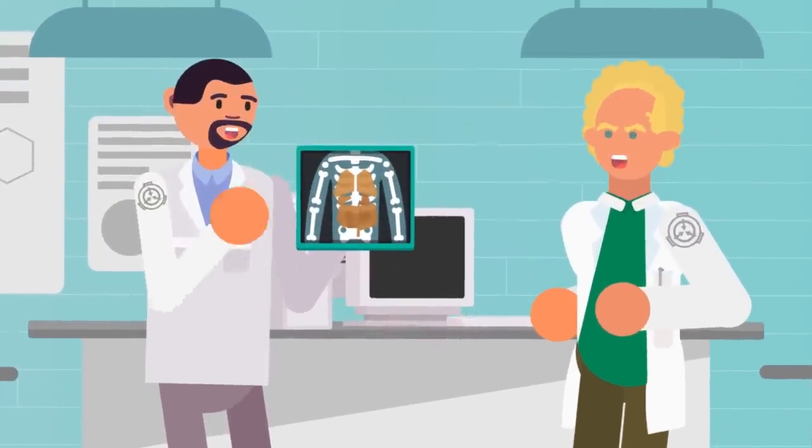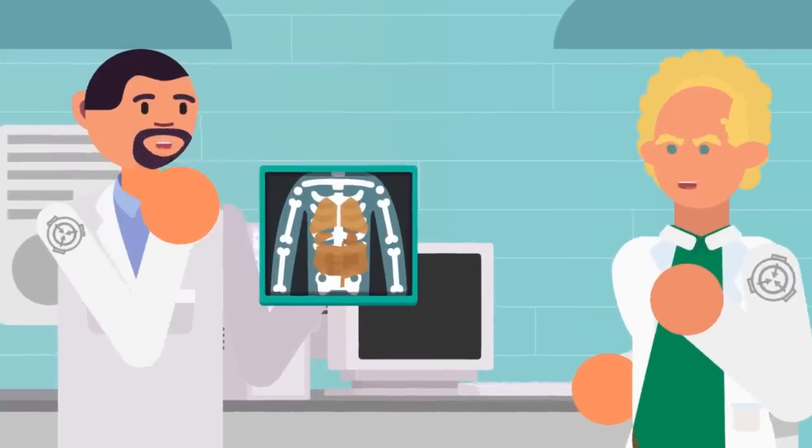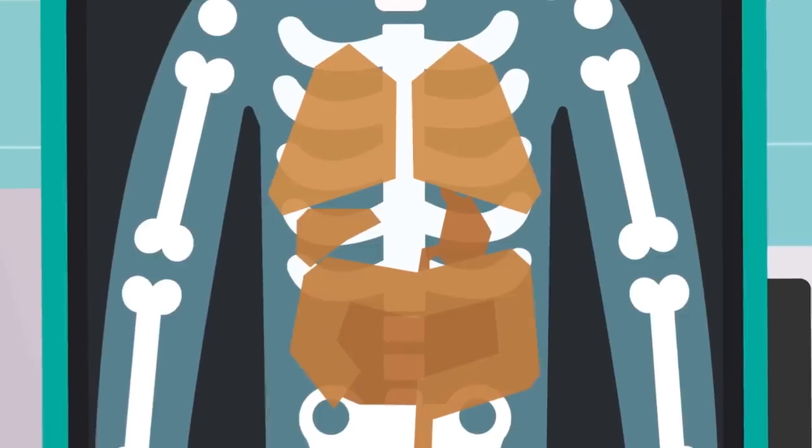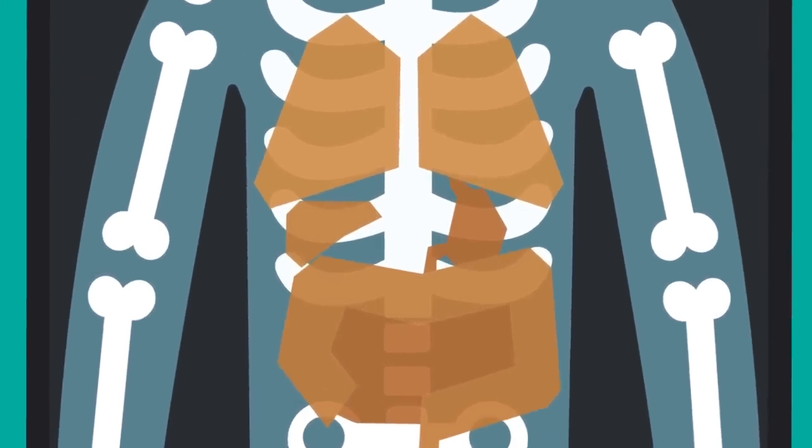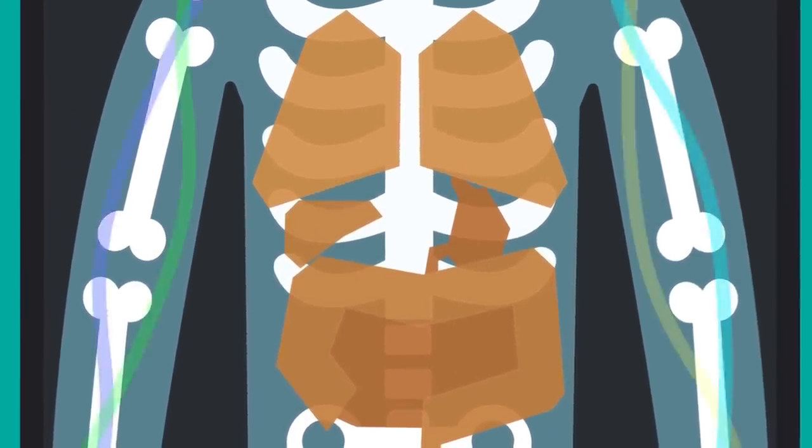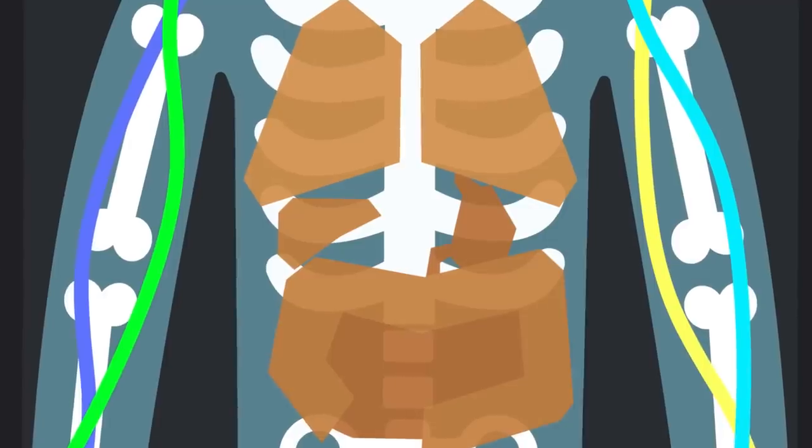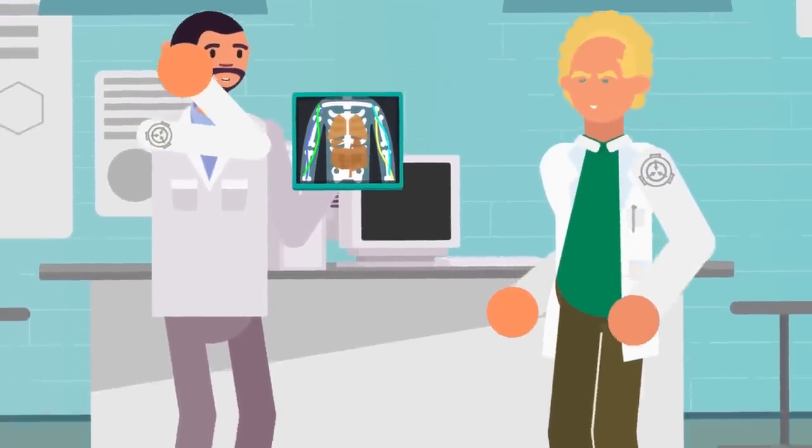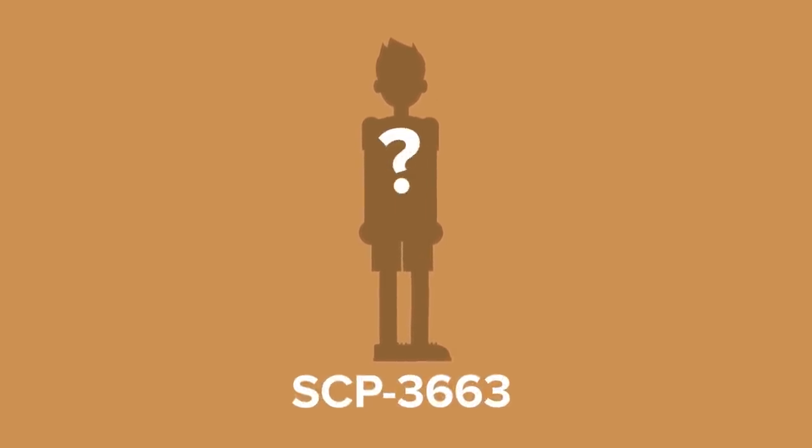Preliminary X-rays found that the cardboard costume hadn't just fused with the boy. It had completely transformed him. On the inside, he was filled with crude cardboard copies of all the major internal organs, with his blood vessels and nerve endings made out of colored pieces of string. They couldn't find any information on who the boy was, if he had ever been a boy at all, and he was given the designation SCP-3663.